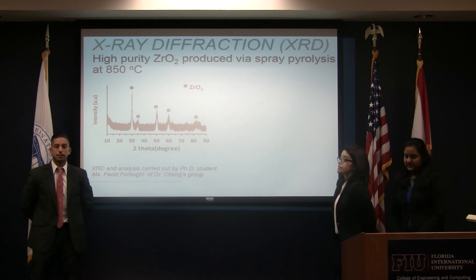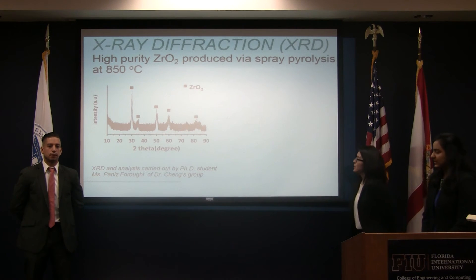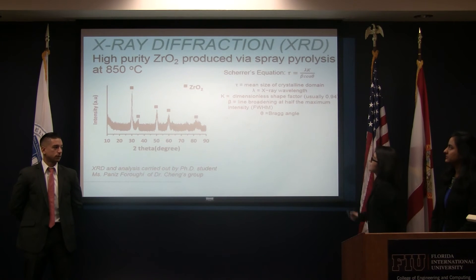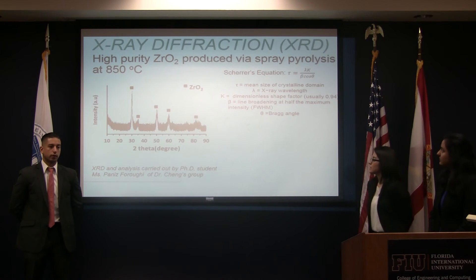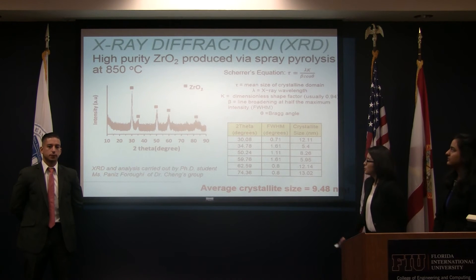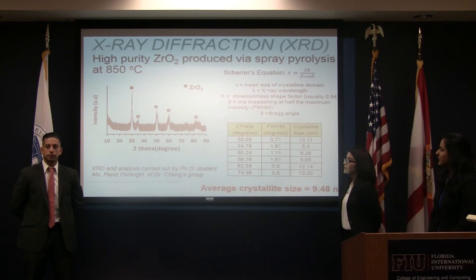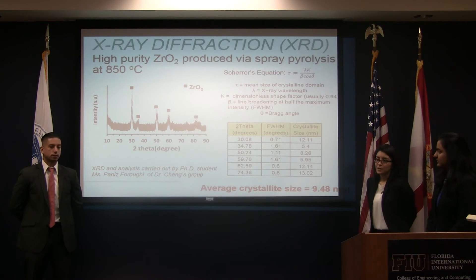The second analysis we conducted was through X-ray diffraction. You can see from the data of the peaks, and using the Scherrer equation — tau equals gamma times k over beta of the zeta — we're able to estimate a crystallite size. Using the position from the peaks and the full width at half maximum values, we were able to estimate an average crystallite size of 9.48 nanometers.